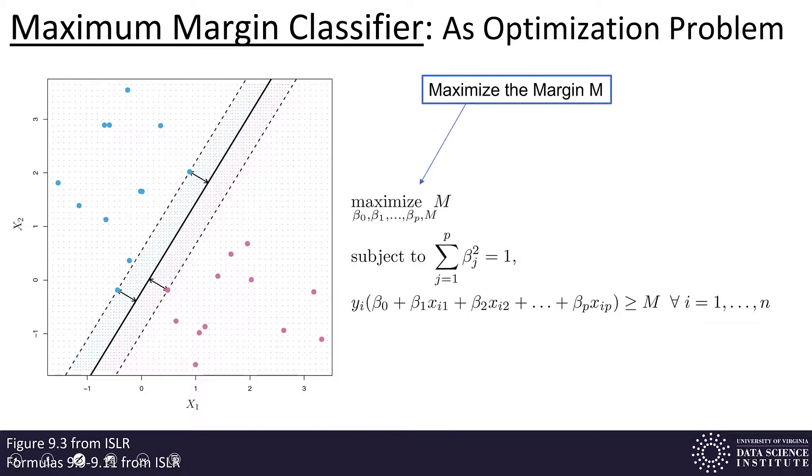So, this first part says that we want to find the betas in resulting margin M, or associated margin M, that would result in the maximum value for M. Remember, M is the margin.